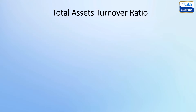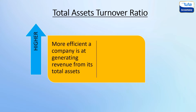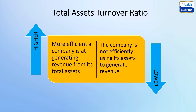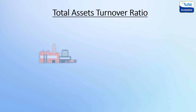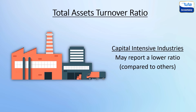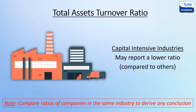Generally, the higher the asset turnover ratio, the more efficient a company is at generating revenue from its total assets, whereas a low ratio indicates the company is not efficiently using its assets. The optimum ratio varies from one industry to another depending upon the volume of sales and asset base. Some industries are more capital intensive and tend to report a lower ratio, so it is always better to compare ratios of companies in the same industry to derive any conclusion.